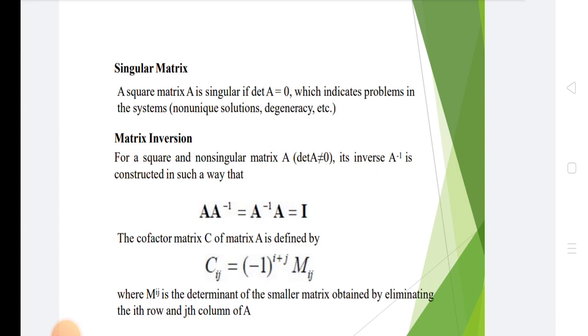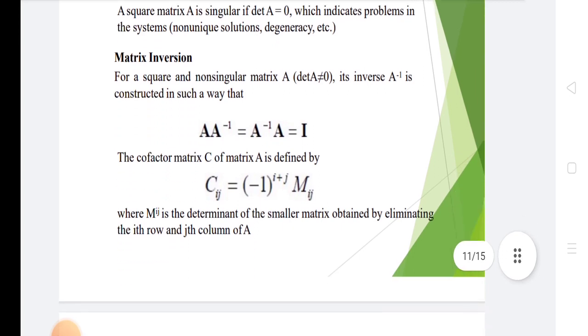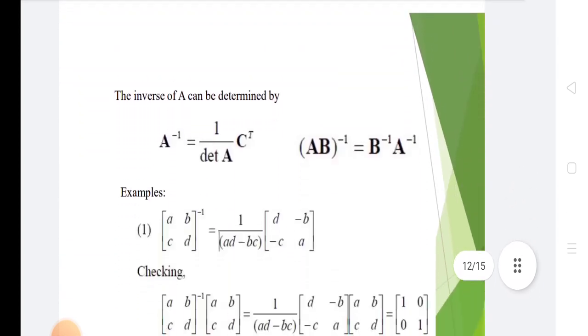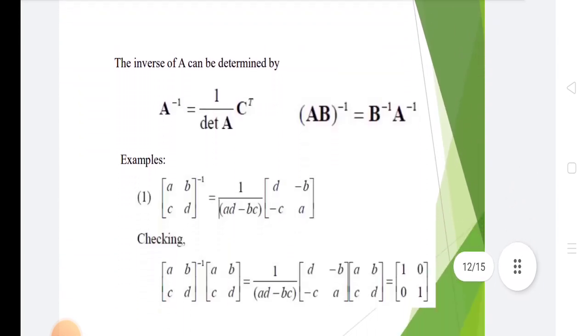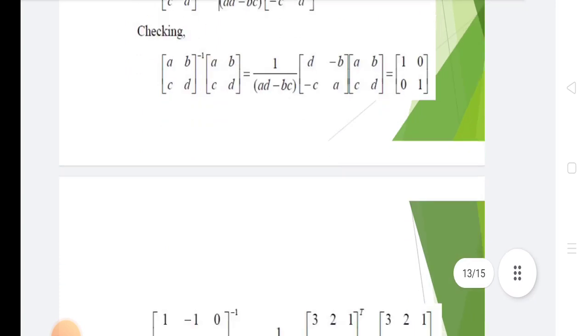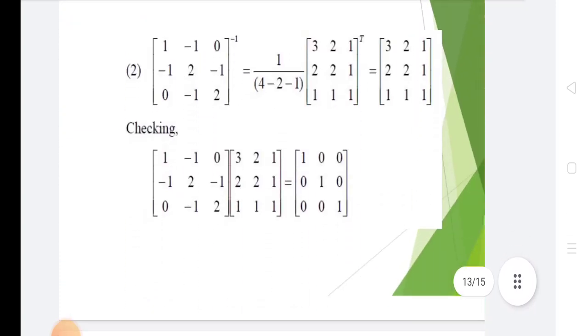Where Mij is the determinant of the smaller matrix obtained by eliminating the ith row and jth column of A. The inverse A can be determined by A inverse equals 1 upon determinant of A into C transpose. AB inverse equals B inverse into A inverse. Example: matrix [A, B; C, D] raised to minus 1 equals 1 over (AD minus BC) times the cofactor matrix.